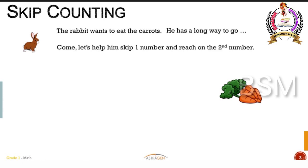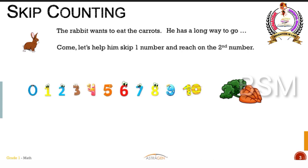We can help this rabbit go and reach the carrots. He has to cross a number line with many numbers in front of him. He is going to take giant leaps — he will leave one number in the middle and reach on the second number. We have the numbers from 0 to 10. He will skip 1 and reach on 2, then skip 3 and reach on 4.